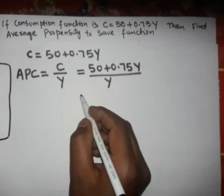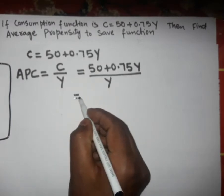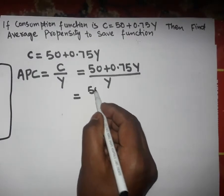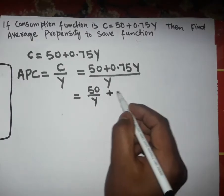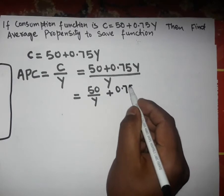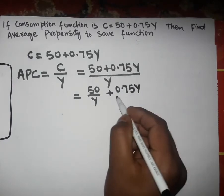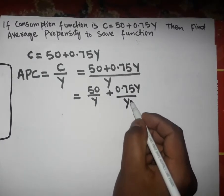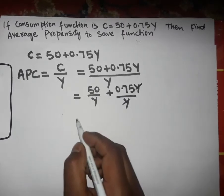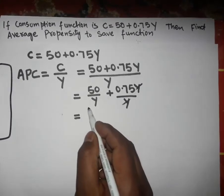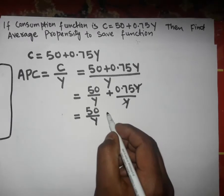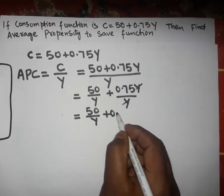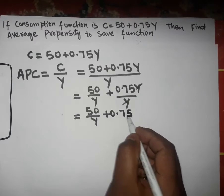Now, solving this, this will become 50 over Y plus 0.75 times Y over Y. Now, this Y and Y will cancel out, so we will get 50 over Y plus 0.75.